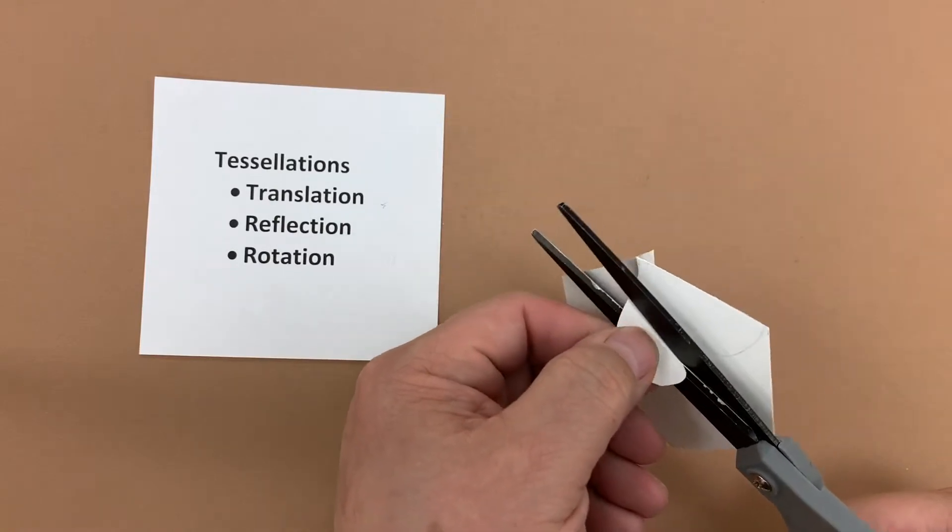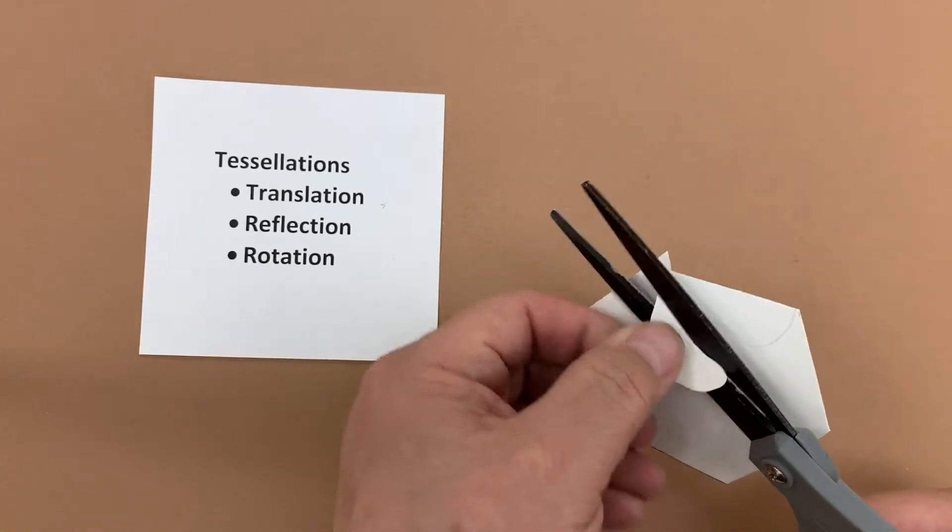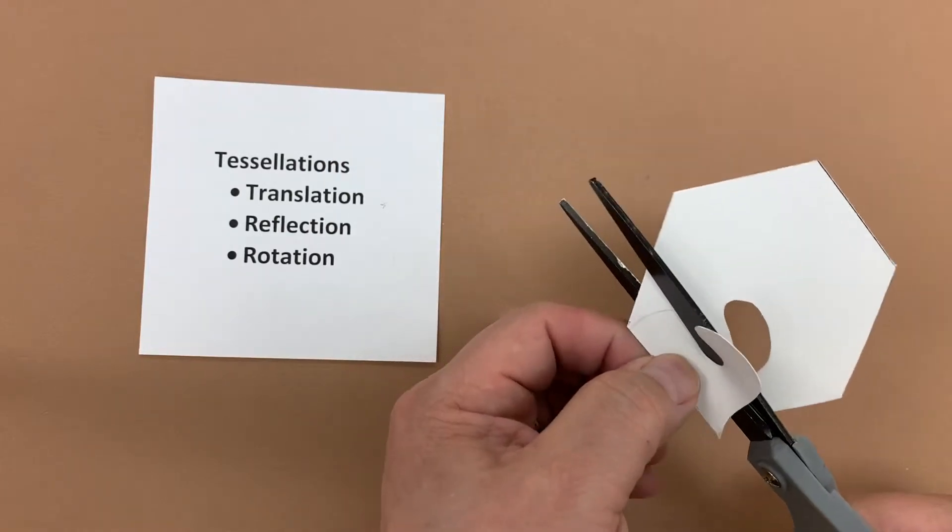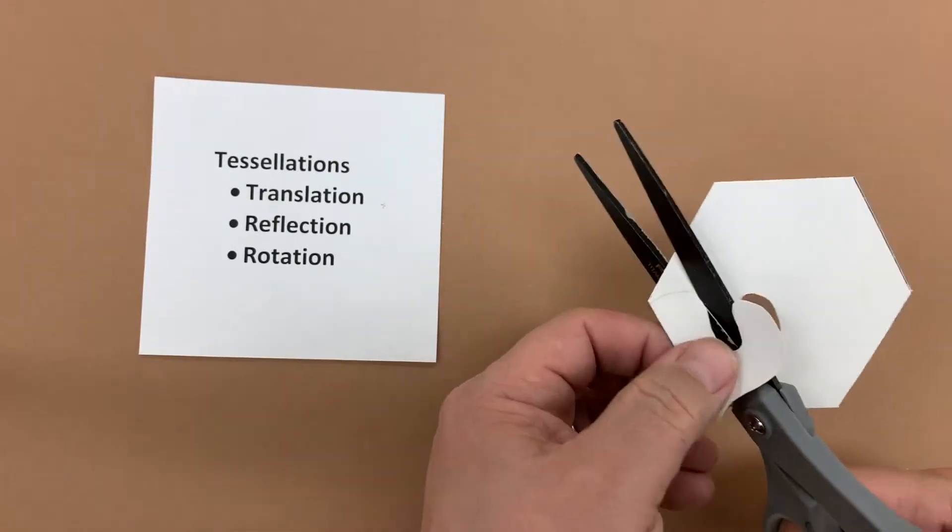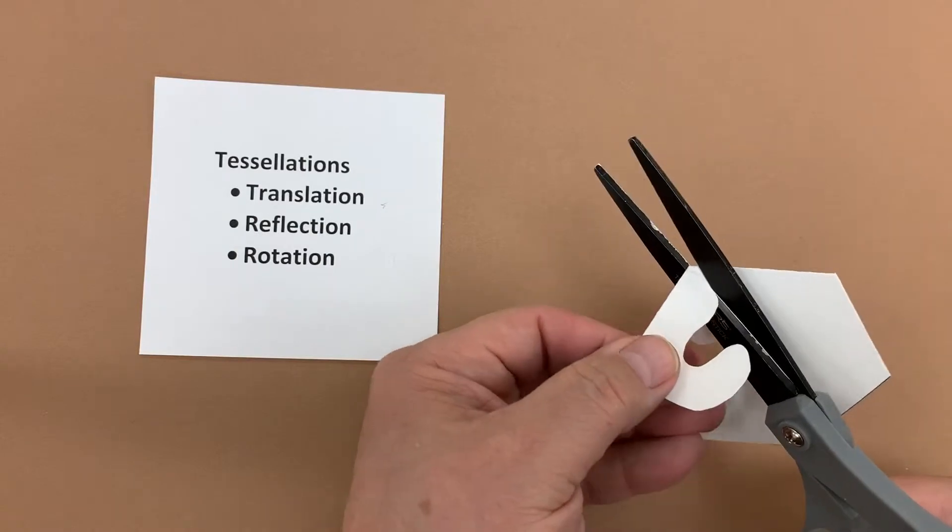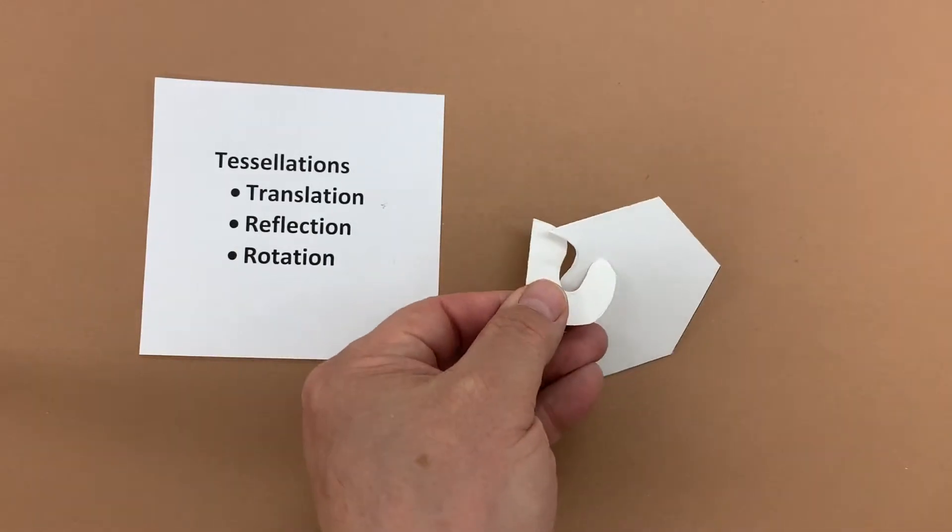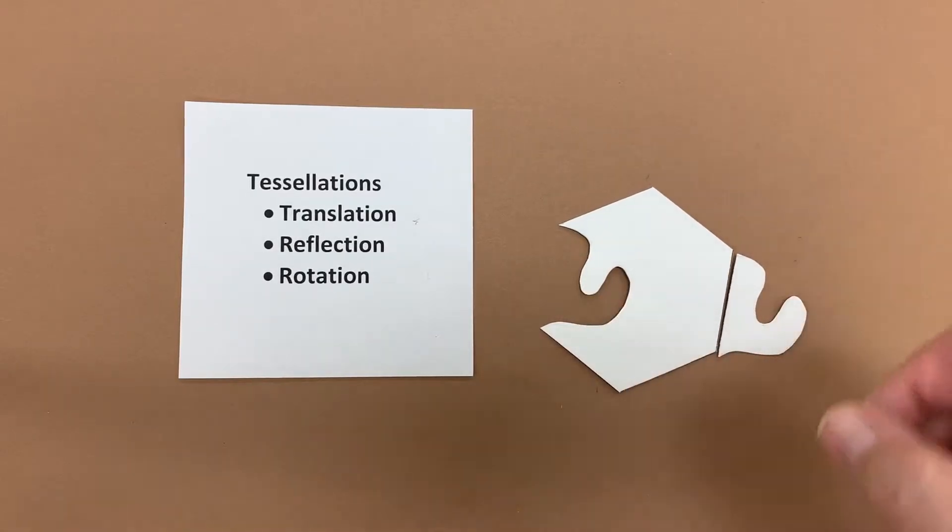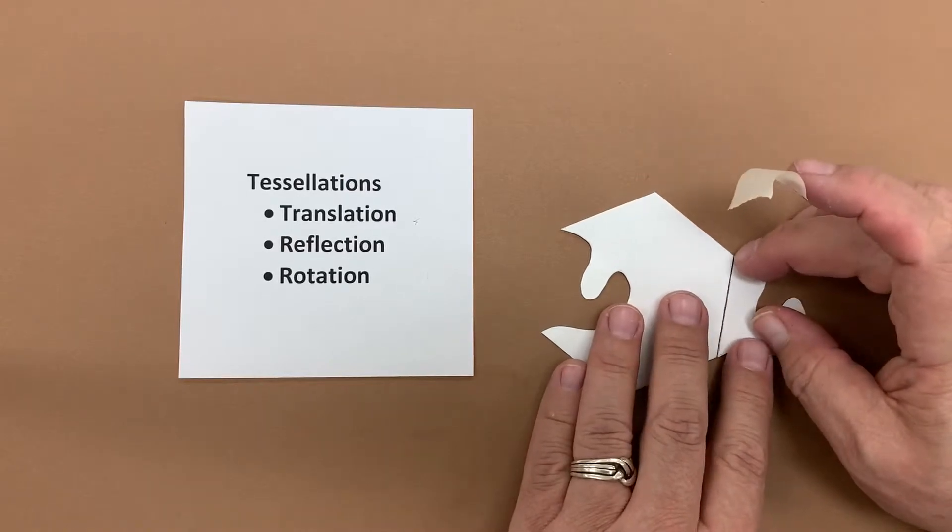Again don't worry if you're not perfect about cutting on the line. The main thing is to make sure you're connecting the corners. So I line it up and I bring it across and then I go ahead and tape that in place making sure that there's no gaps.